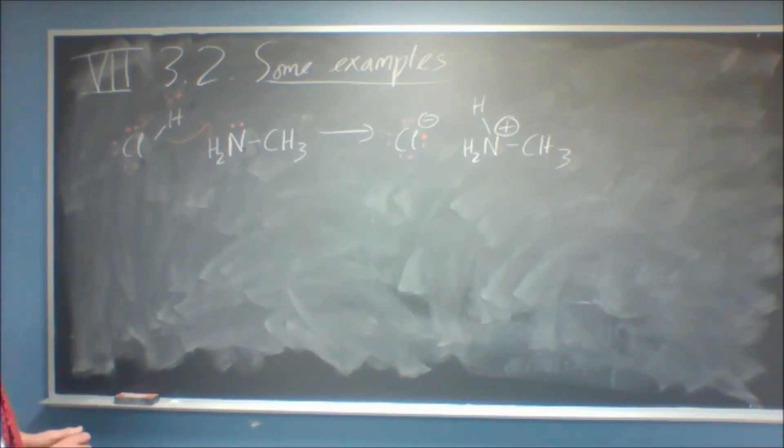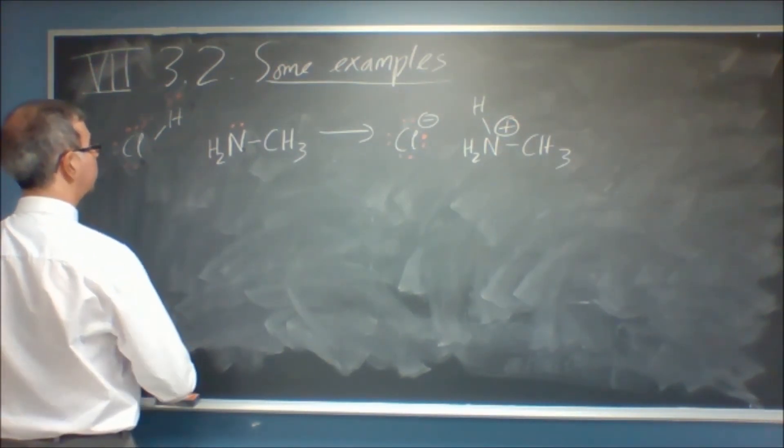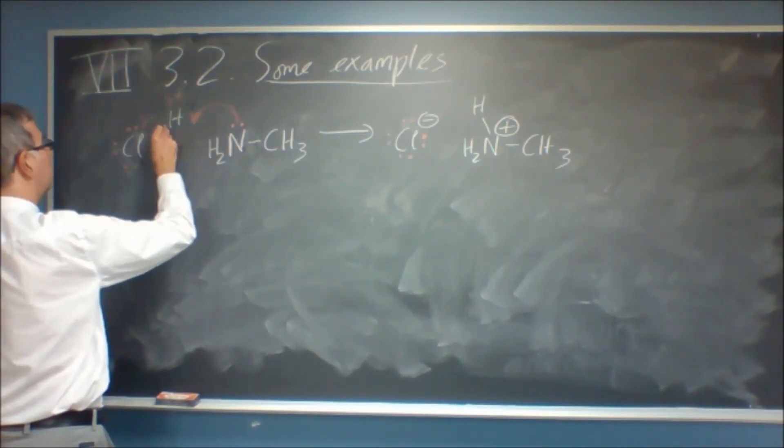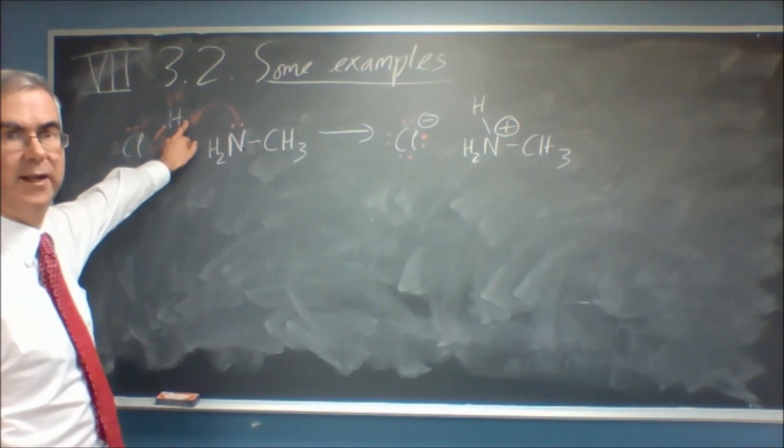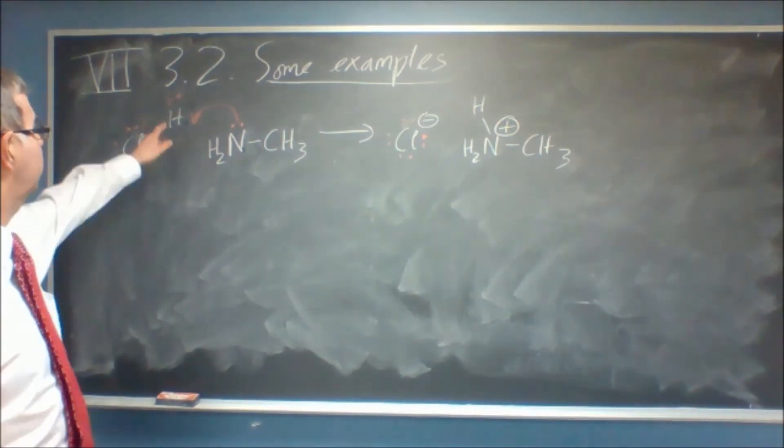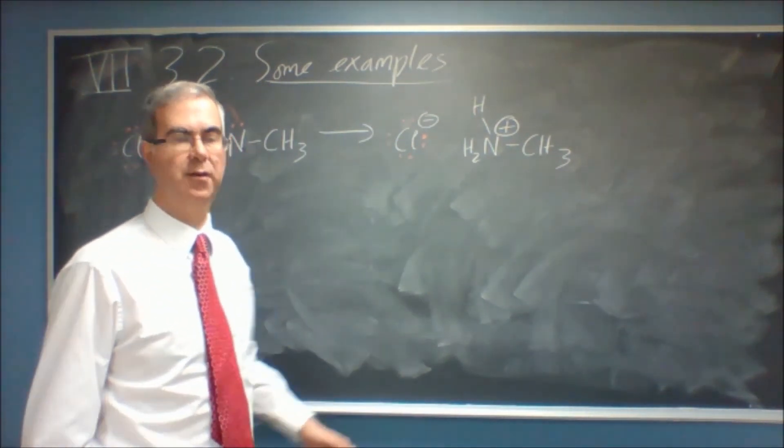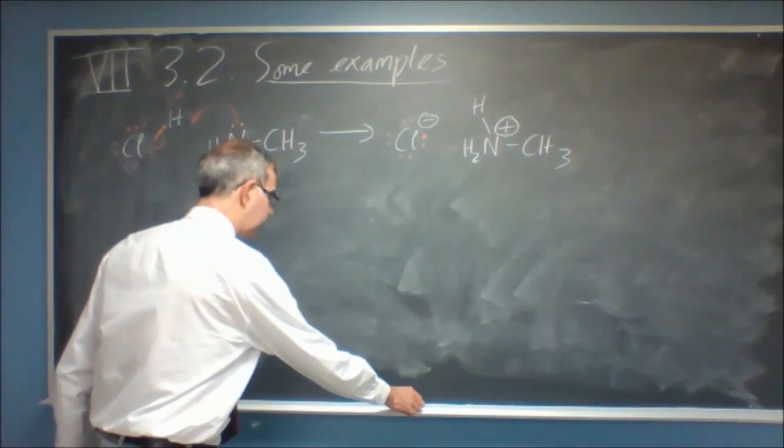This is actually a good leaving group, so it actually wants to form Cl-. This lone pair goes towards the electrophilic hydrogen, and kicks out Cl-, breaking that bond. A pair of electrons ends up on Cl, so it ends up one minus.